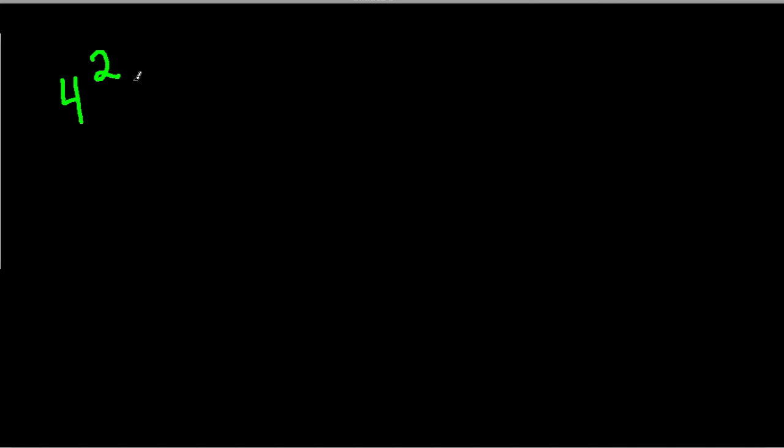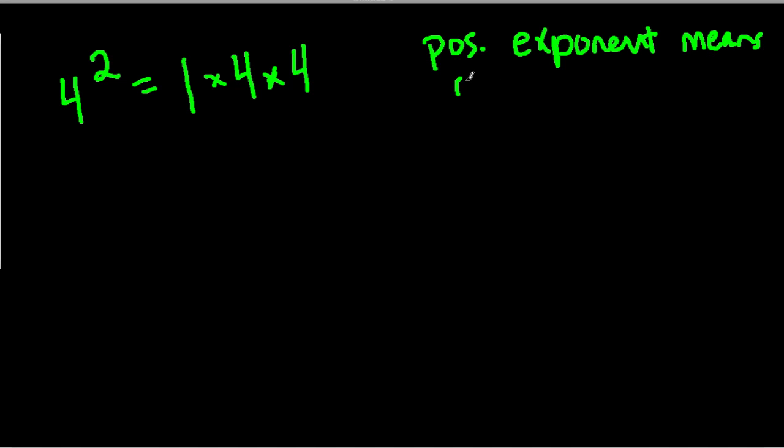So what I'm saying to you is that if you have, let's say, 4 to the 2nd power, remember, that means 1 times 4 twice, because we're multiplying by 4 twice. So in fact, another way of looking at positive exponents is to say that a positive exponent means multiply.